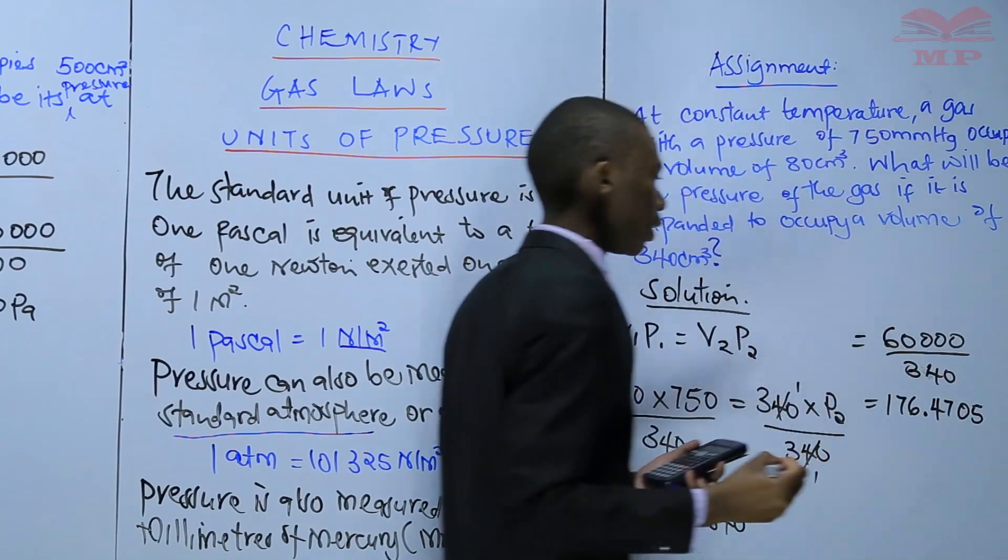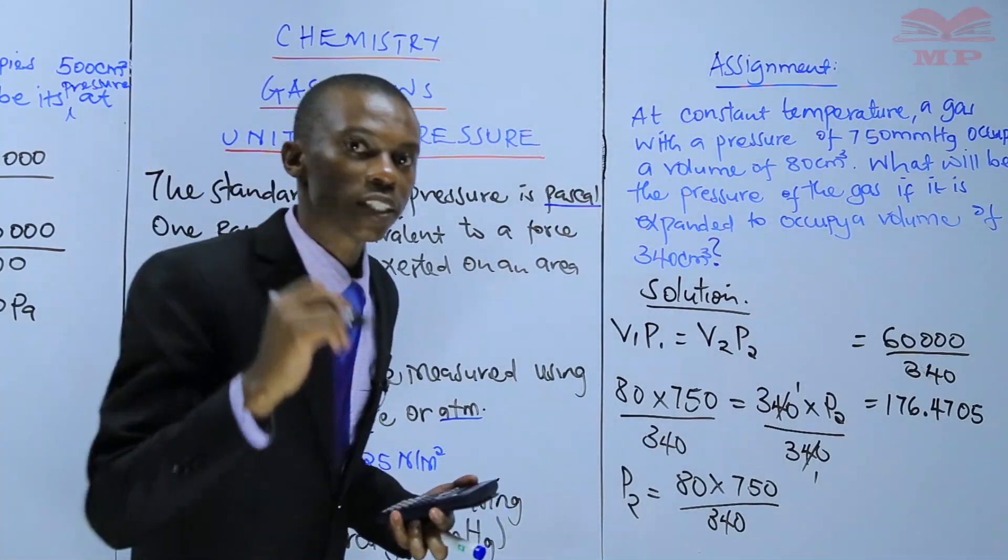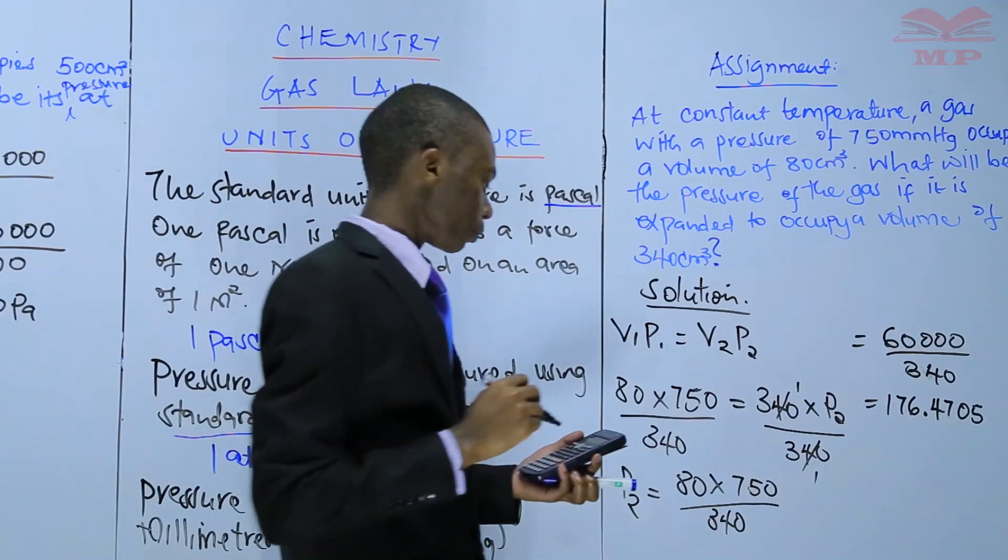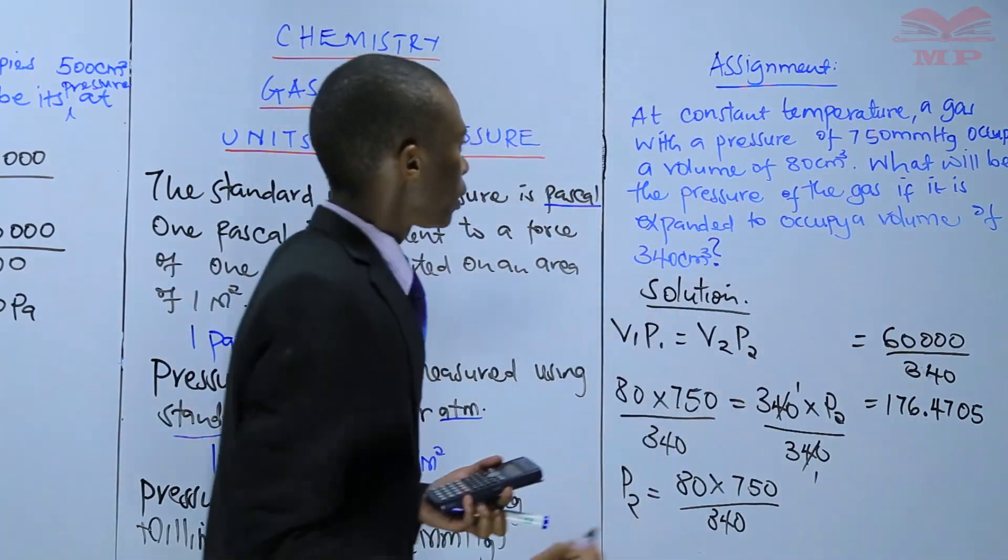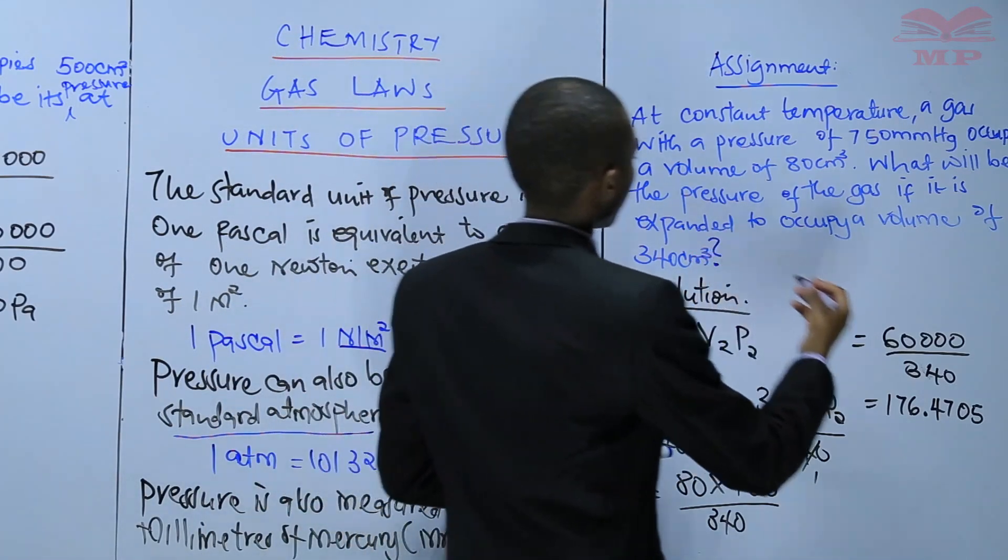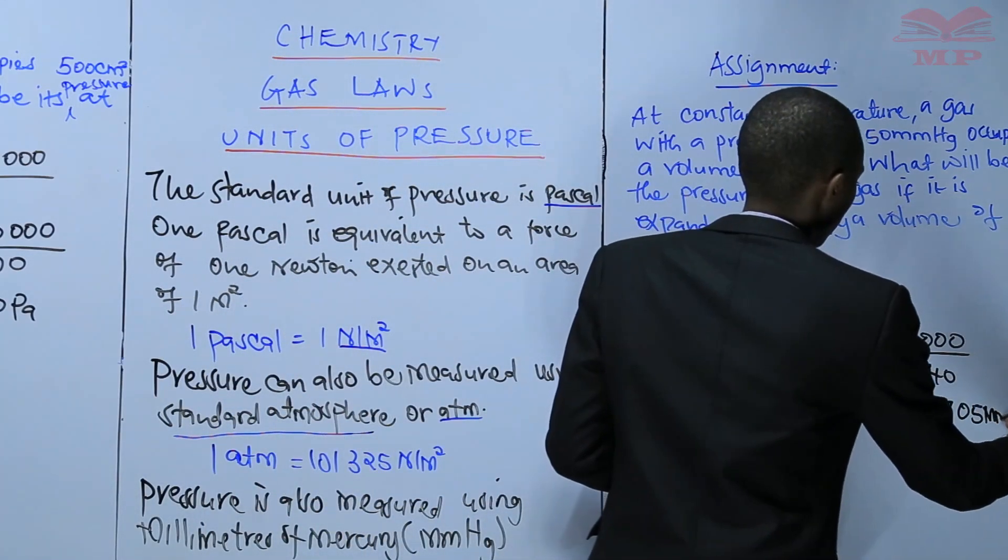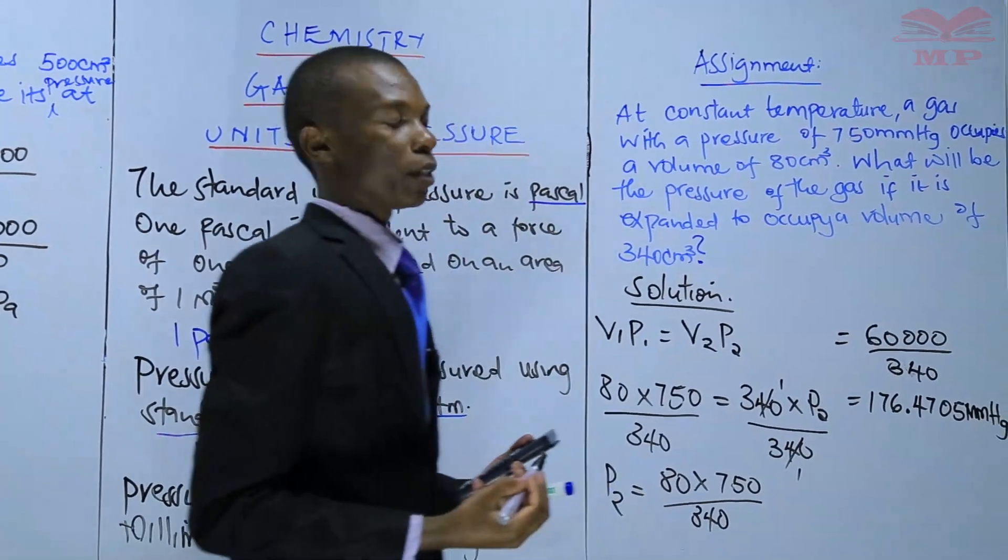Where there are decimal places, ensure you give at least four decimal places. Because we are calculating the pressure, this will be pressure in millimeters of mercury.